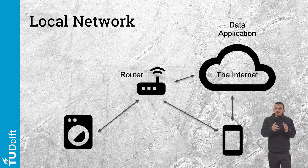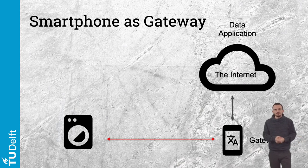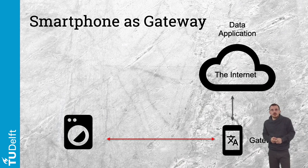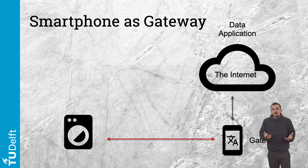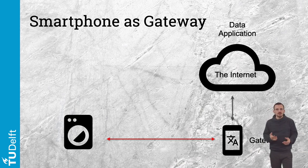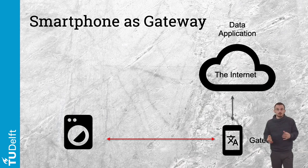The internet's four layers are not the only way to make a network. We will see in the next module a wide range of network technologies. You might be familiar with Bluetooth, for instance, which could be used to communicate between the washing machine and the smartphone — shown here with the red arrow. In this case, the smartphone would be what we call a gateway, a translator from one network to another, translating from the Bluetooth network to the internet network.